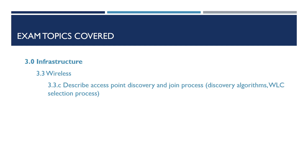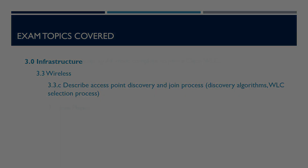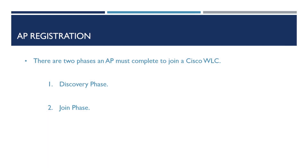As you can tell from the exam topic, there are two phases that must be completed before an access point can join a wireless LAN controller. These are the discovery phase and the join phase. In order for the access point to join a wireless controller, it must connect to the controller via the management interface.